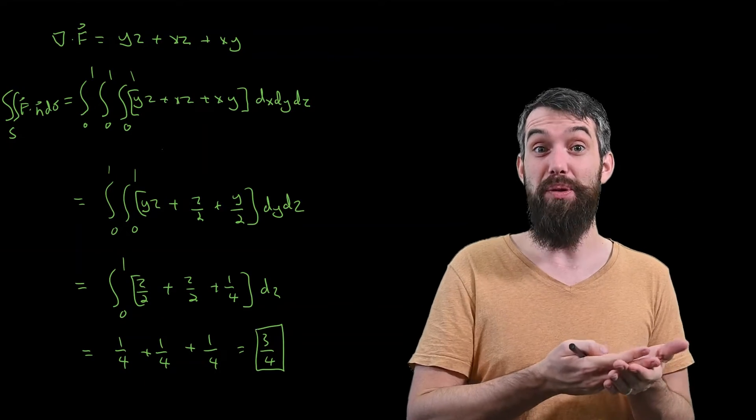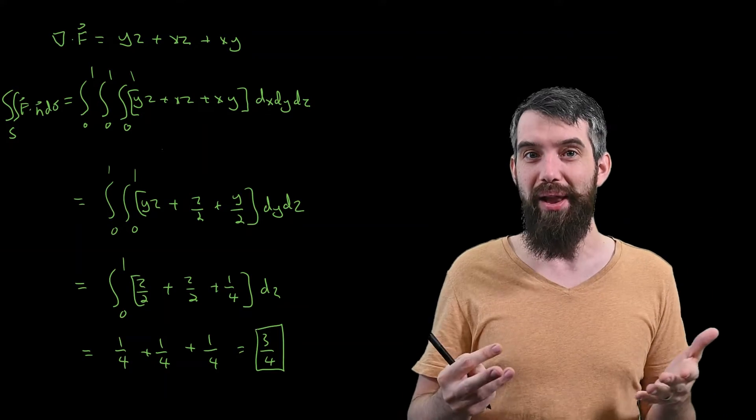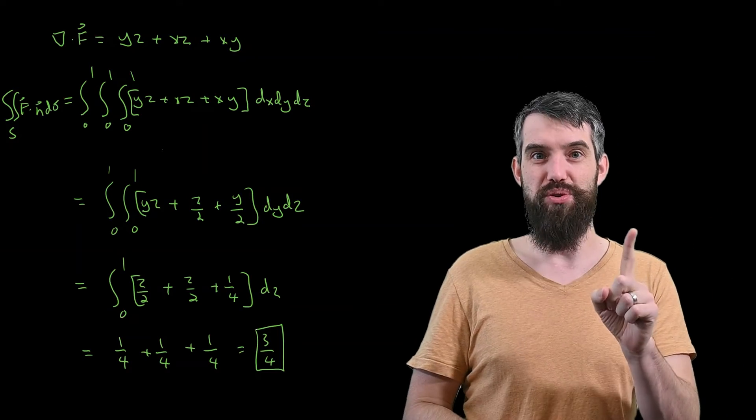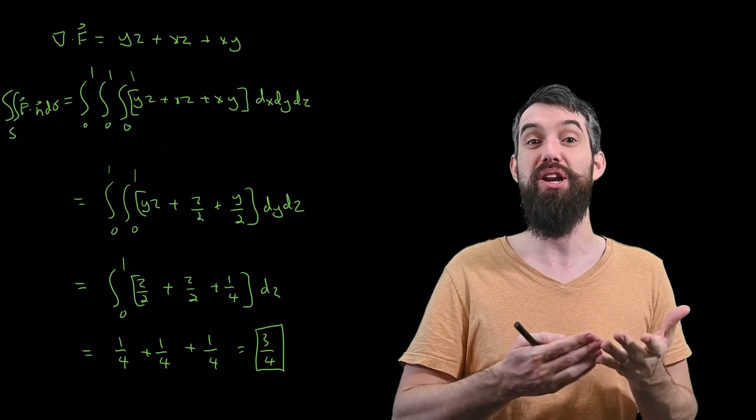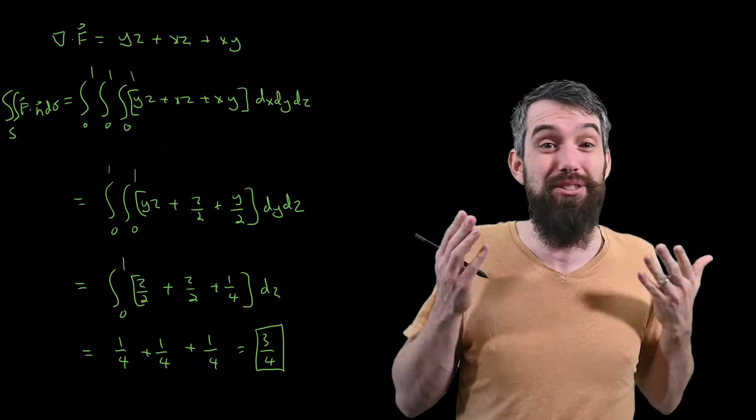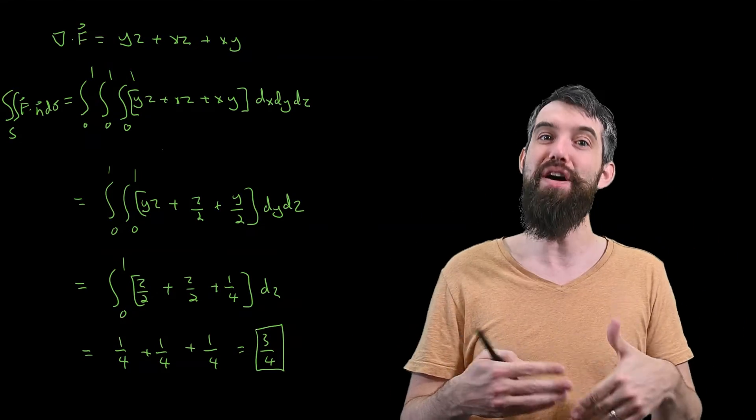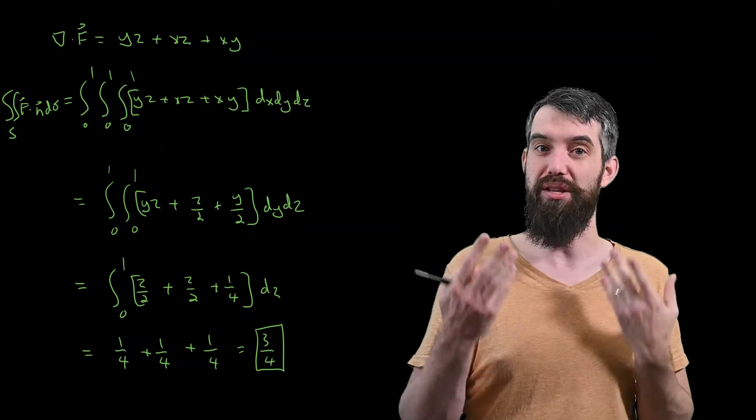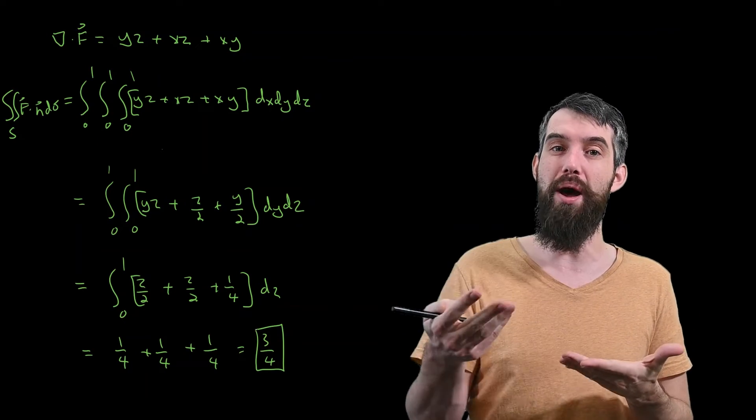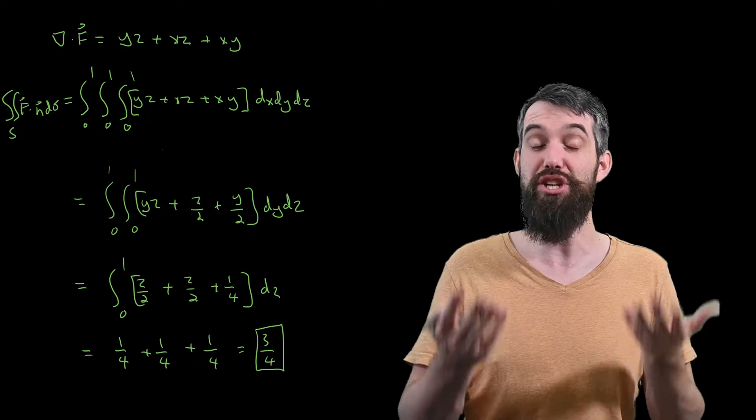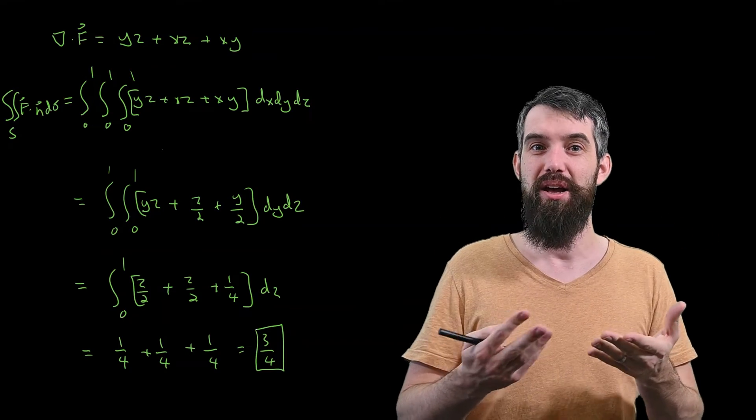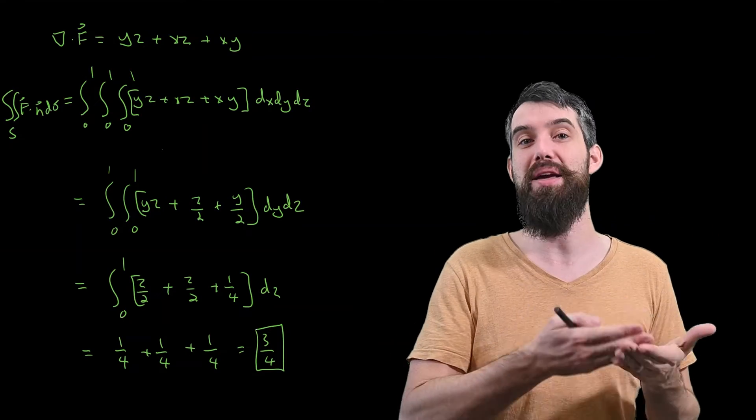So in this example, the divergence theorem worked really well, because we got this one integral when we applied the divergence theorem, and we're going to use a triple integral, and it was a triple integral that we could do. It was easy to find out the limits of integration, it was just a unit cube, they were all 0 up to 1, and so we could just execute that integration, and we have finally found the outward flux across the surface given by this particular field.